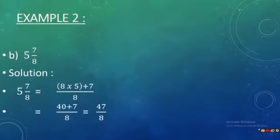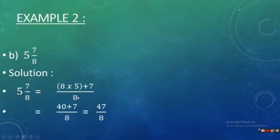Another example is 5 whole 7 by 8. Again, first we multiply the denominator by the whole number: 8 multiplied by 5, then bracket, then plus, then the numerator which is 7, then the whole divided by the denominator which is 8. Now 8 fives are 40, then 40 plus 7 becomes 47, so our answer is 47 by 8.